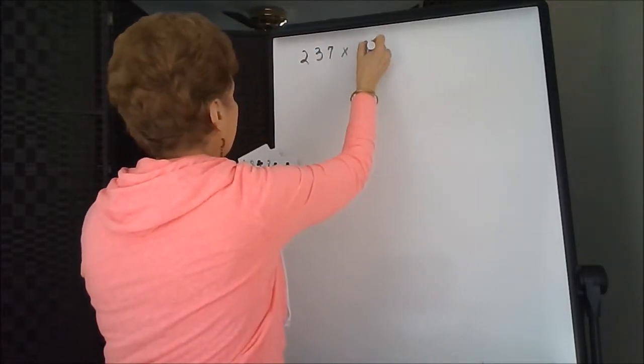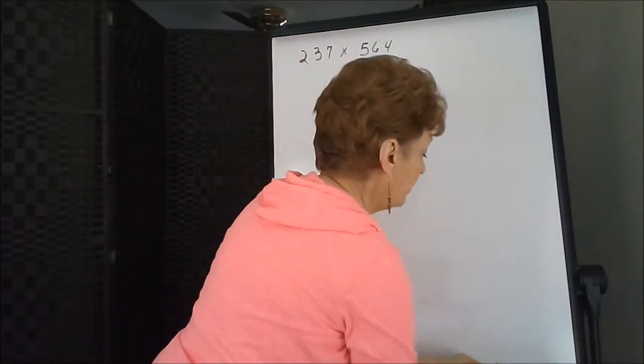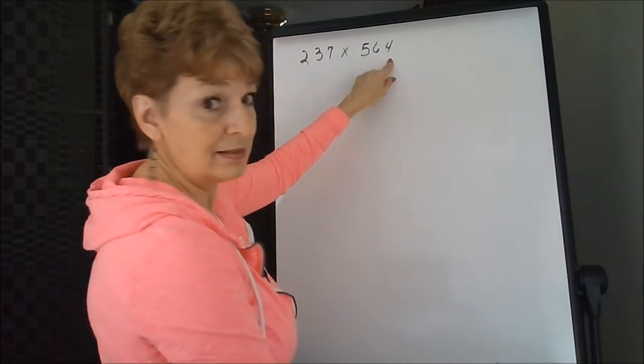237 times 564. We have one, two, three, four, five, six digits. We need six spots in our box.